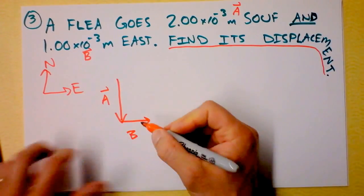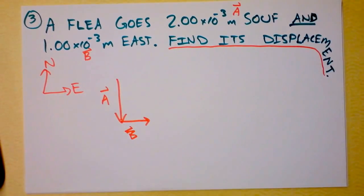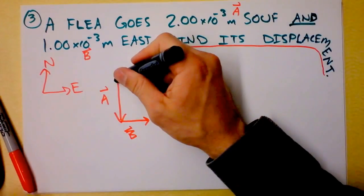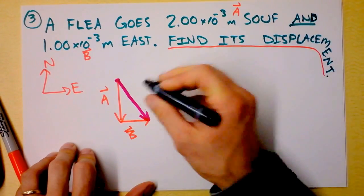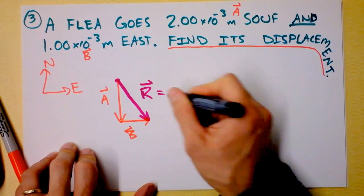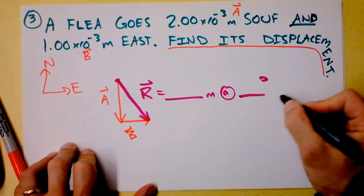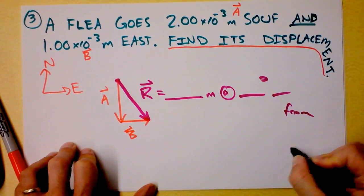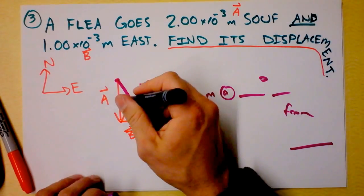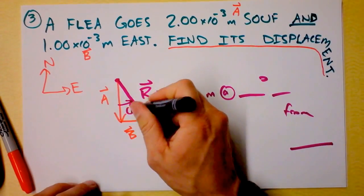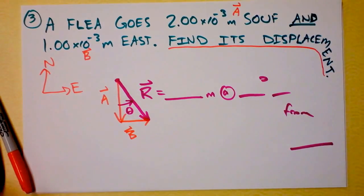Long vector to the south and then short vector to the east. Done. Here's A, here's B, and I'm supposed to draw R. R starts right here and goes right here, and I'm trying to tell you everything about R. It's probably blah blah blah in meters at so-and-so degrees, something from something else. Let's figure it out, and that's going to be that angle right there that we're trying to find. It's the angle at the base of R that we're trying to get.